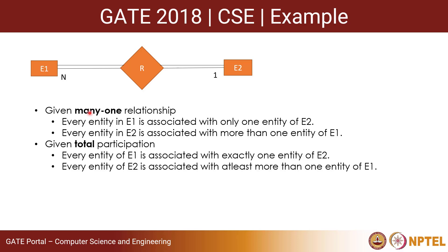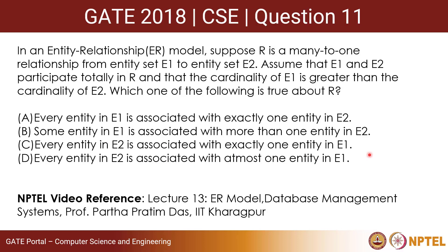Given total participation, every entity of E1 is associated with exactly one entity of E2. If it were not total participation, it could be at most one entity, but since total participation is given, every entity of E1 is associated with exactly one entity of E2, and every entity of E2 is associated with one or more entities of E1. So option A — every entity in E1 is associated with exactly one entity in E2 — is the correct answer. I hope you all get this. Thank you.